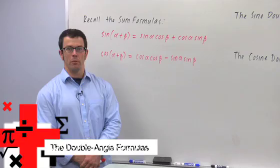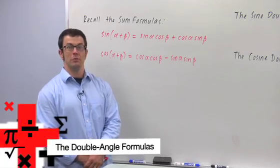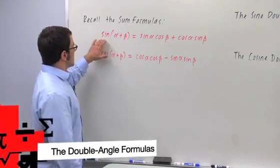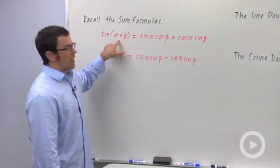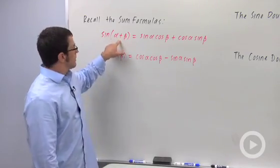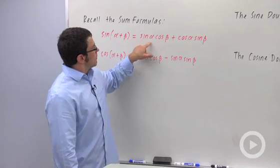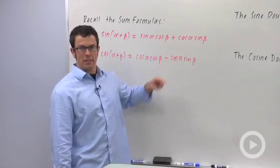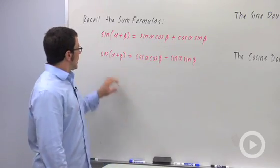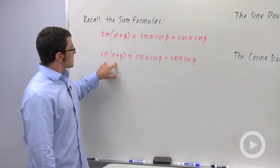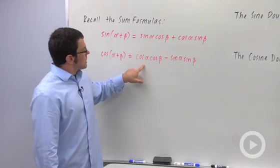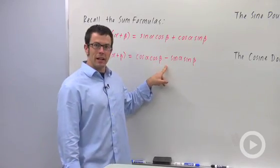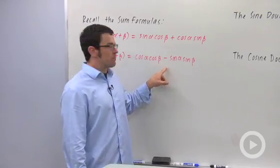I want to use the sum formulas to introduce some new identities. Recall the sine of a sum, alpha plus beta, is sine alpha cosine beta plus cosine alpha sine beta. And the cosine of a sum, alpha plus beta, is cosine alpha cosine beta minus sine alpha sine beta.